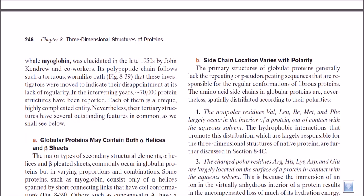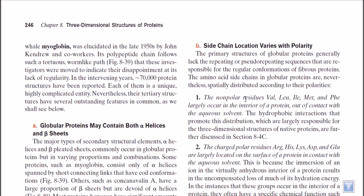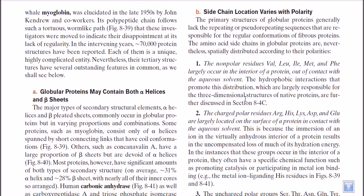An important observation about the three-dimensional structure of a protein is that side chain location varies with polarity. Non-polar residues such as valine, leucine, isoleucine, methionine, and phenylalanine are largely found at the interior of a protein. In contrast, charged or polar residues like arginine, histidine, lysine, aspartic acid, and glutamic acid are largely found on the surface of a protein, in contact with the aqueous solvent.